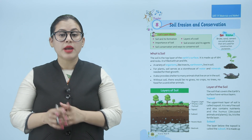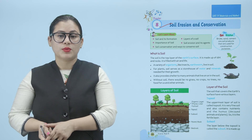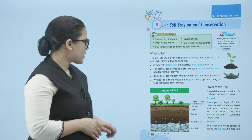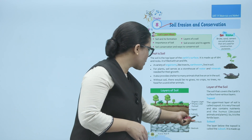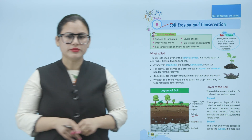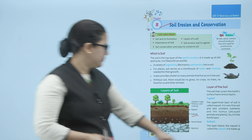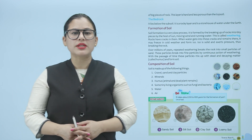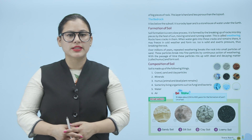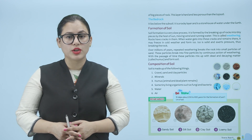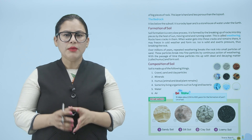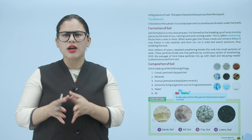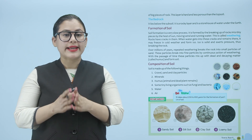The layer below the topsoil is called the subsoil. Ab topsoil ke neeche waali jo layer hai, that is subsoil. It is made up of big pieces of rock. This layer is hard and less porous than the topsoil. Ab yeh jo layer hoti hai, big pieces of rock se bani hoti hai, toh yeh hard hoti hai.